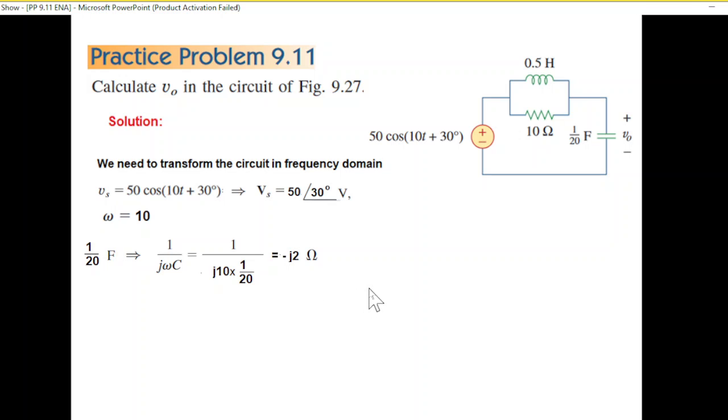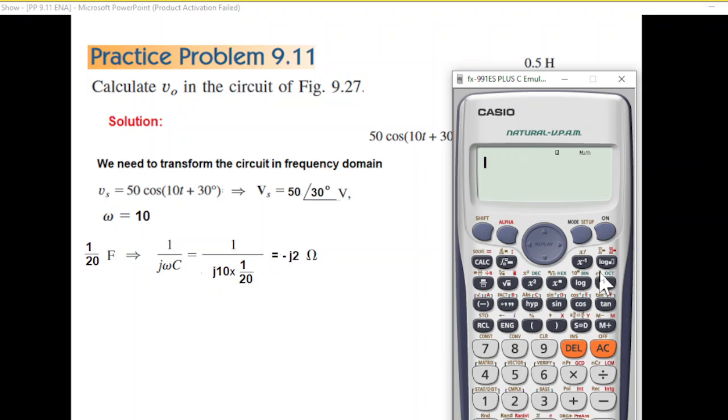Let me show you a simple trick with the calculator. You have to set it in complex mode: alpha, mode 2 for complex. Now use the fraction option: 1 at the top, then j10 times 1/20 at the bottom. Press equal sign—the answer is -2j. This is what we can write directly by going into complex mode.